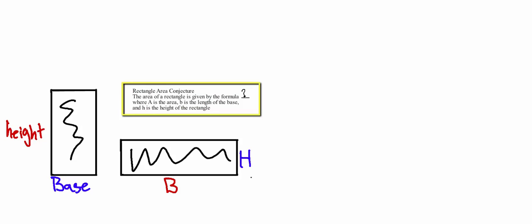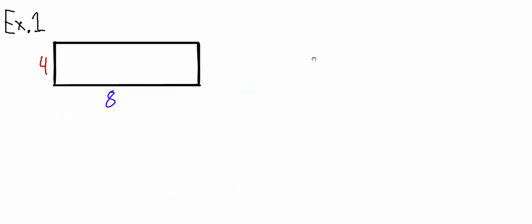So, now knowing that, I would like you to solve this conjecture up here. The formula you should have gotten was area equals base times height. So, here you have your first example. You've got to plug in your formula, which is: Area equals base times height.